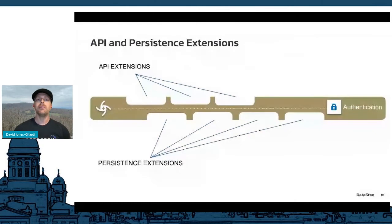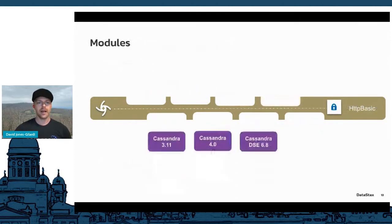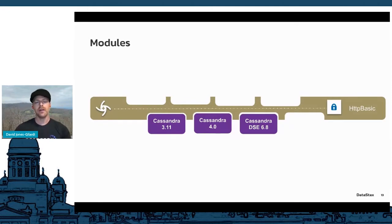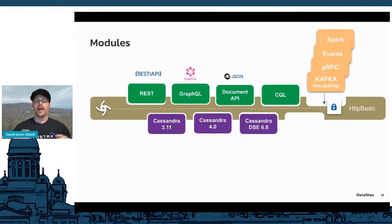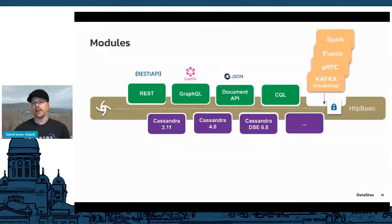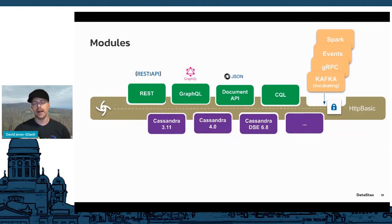Stargate is built of a set of API extensions, persistence extensions, and an authentication layer. From the persistence standpoint, it currently supports open source Cassandra, the upcoming Cassandra 4.0, and DataStax Enterprise 6.8 and above. It provides REST, GraphQL, JSON Documents, and CQL APIs today, with Kafka, gRPC, events, and Spark being incubated. It's built with a pluggable framework so you can add other APIs and data stores.